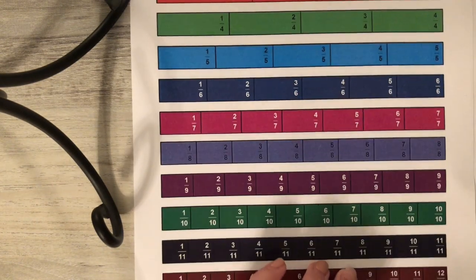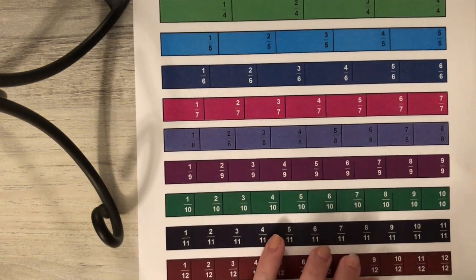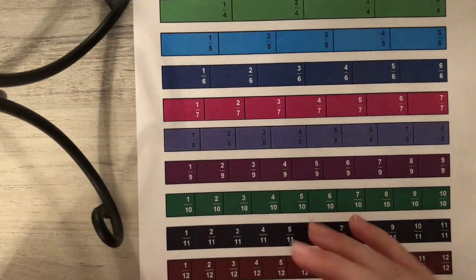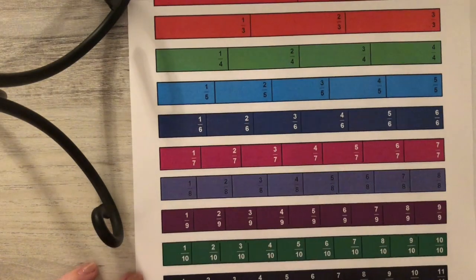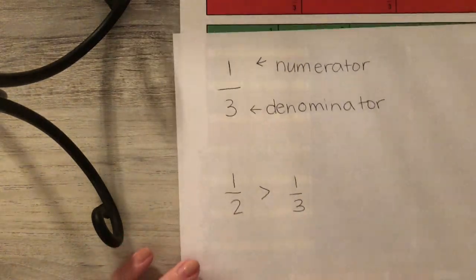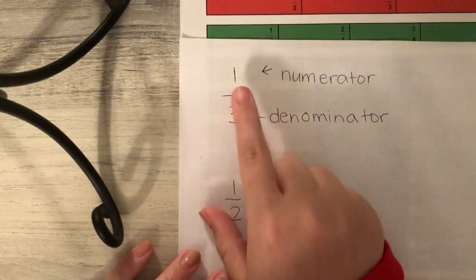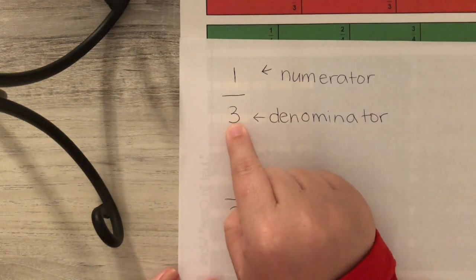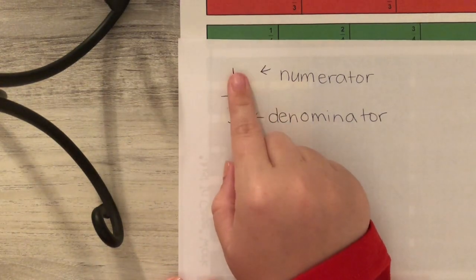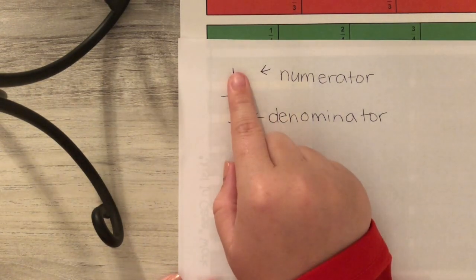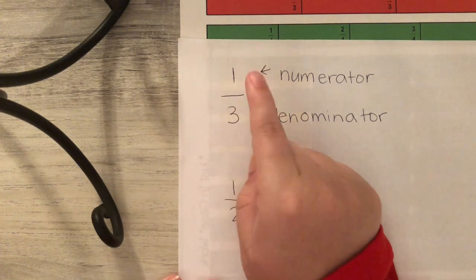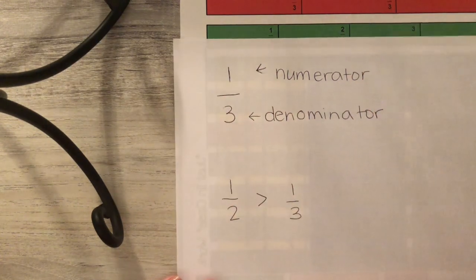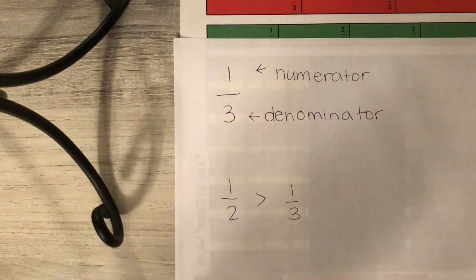Another thing I wanted to talk about is how we say fractions. We have two parts: a numerator and a denominator. When you say the numerator, you say it just like how you count: one, two, three, four, five, six, and so on.